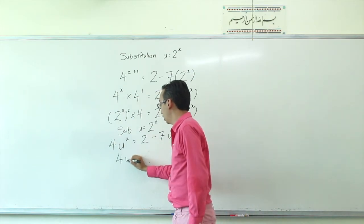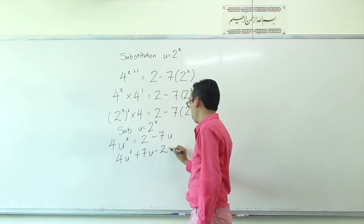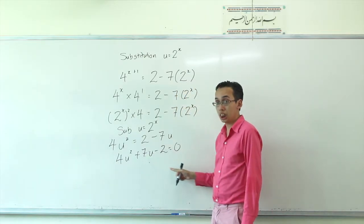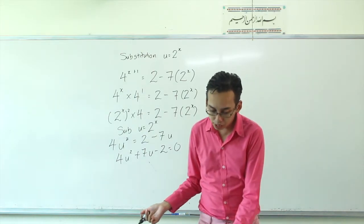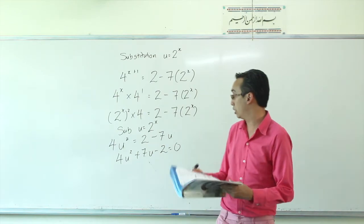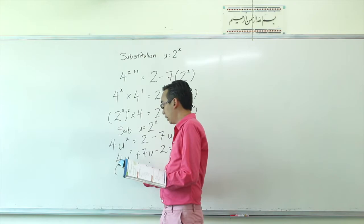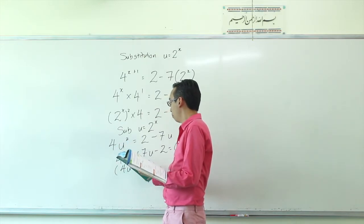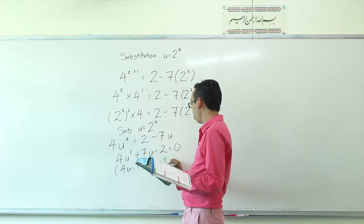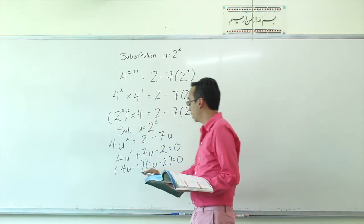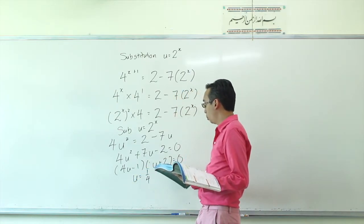Rearranging, we get a quadratic equation. Since it's a quadratic equation, we can solve it as we would any normal quadratic. Factorising, we get 4U minus 1 and U plus 2, giving us U equals 1 quarter and U equals negative 2.